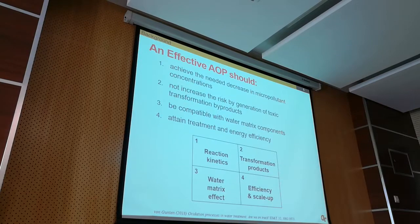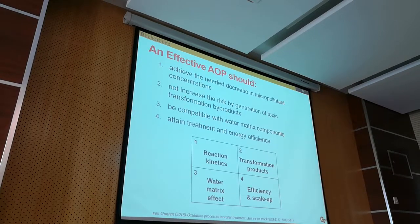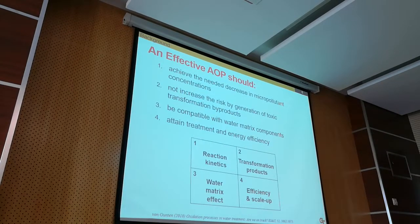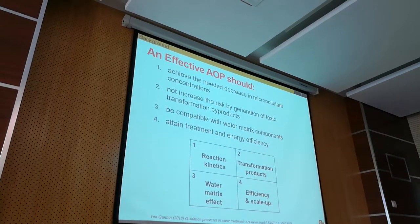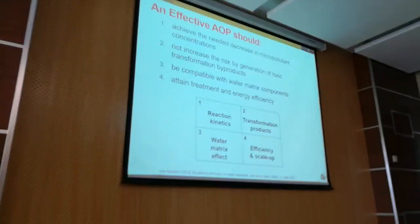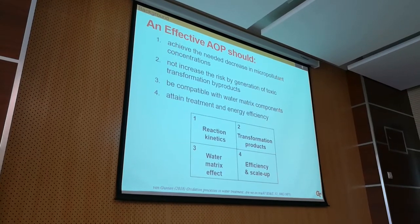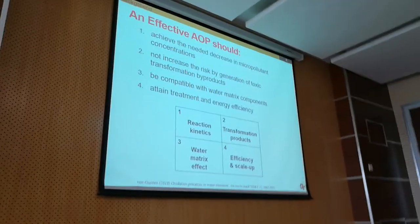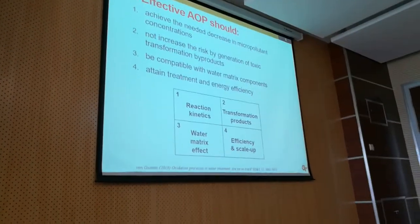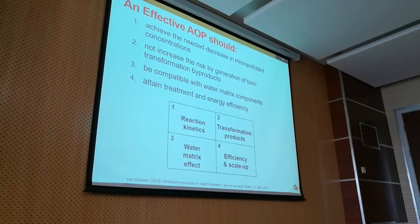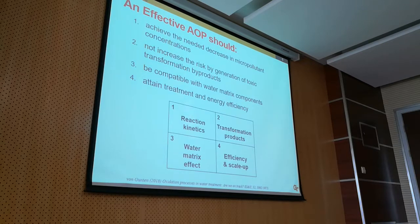For the number one objective, understanding the reaction kinetics is key. We need to understand what radical species are generated by the AOP and what it can react with at what rate. This is very important.